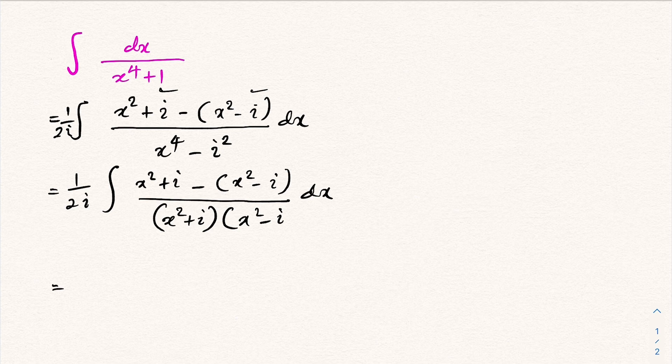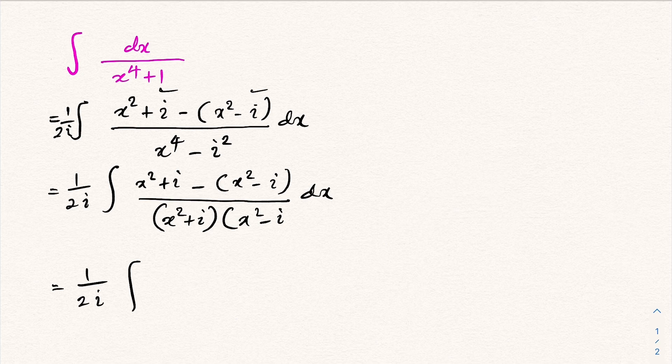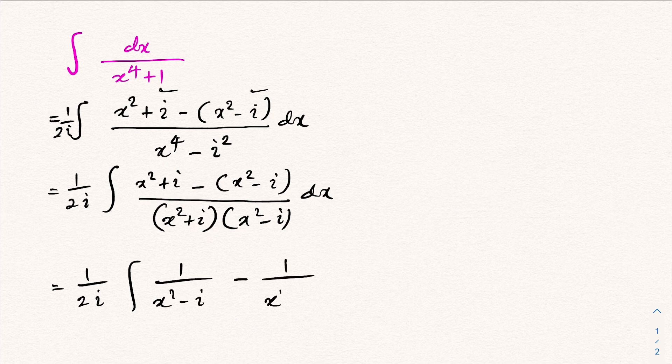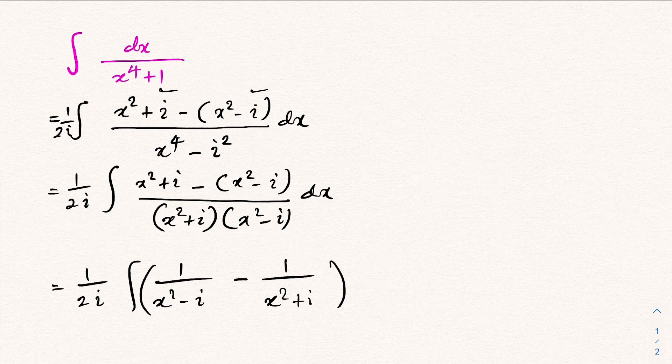This equals one over 2i. Now, if we divide by the denominator, we have one over x squared minus i minus one over x squared plus i dx.